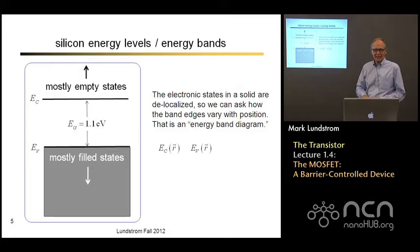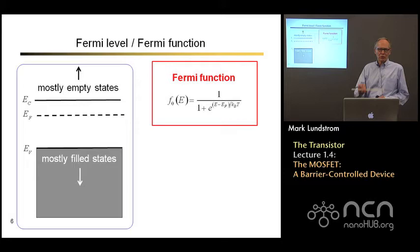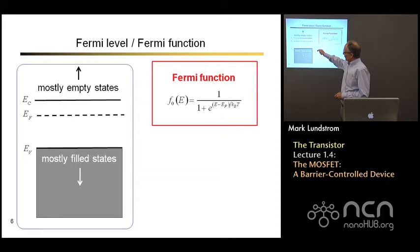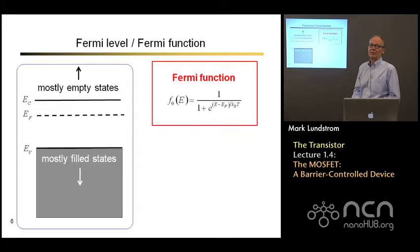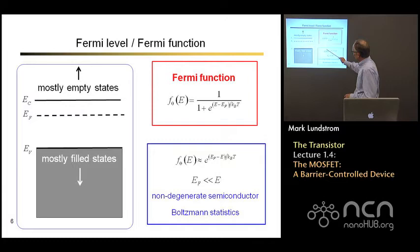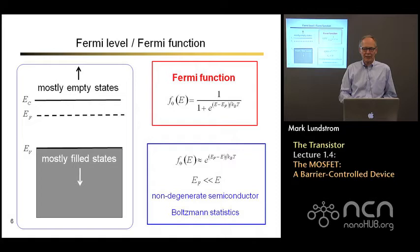We're going to be interested in plotting the bottom of the conduction band versus position, and the top of the valence band versus position. It's going to be very important to locate the Fermi level on the plot. The Fermi function tells us the probability that a state is occupied. States above the Fermi level are mostly empty; states below are mostly filled — completely filled if way below, completely empty if way above. We frequently approximate the Fermi function by a Boltzmann distribution when energy states are way above the Fermi level. We call this a non-degenerate semiconductor or Boltzmann statistics.